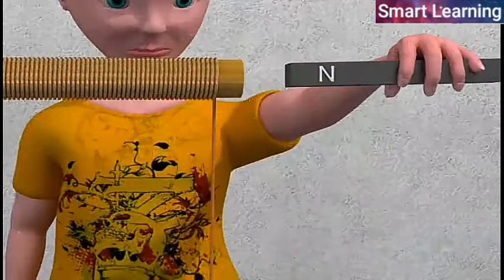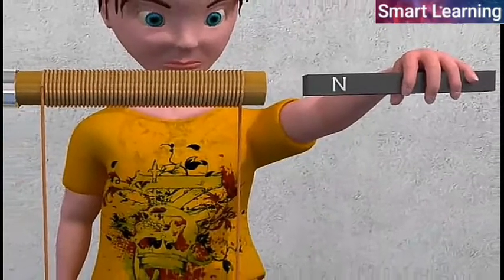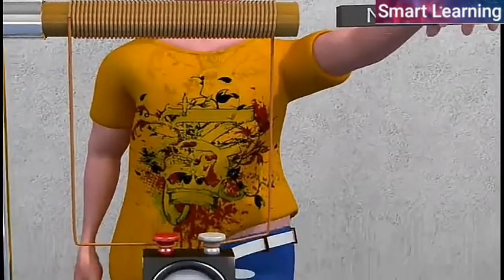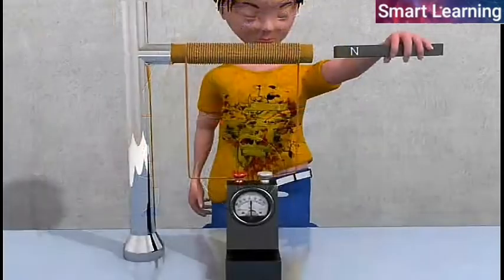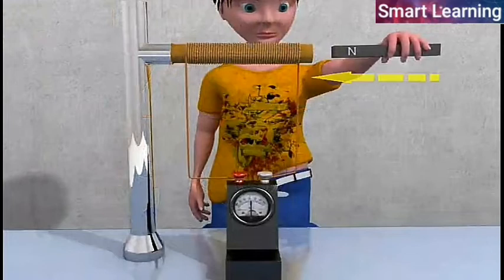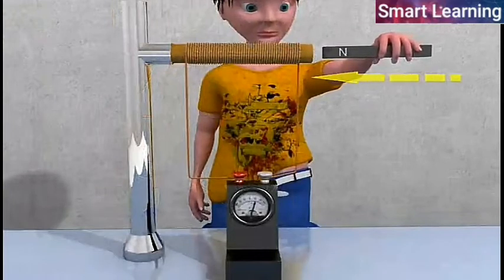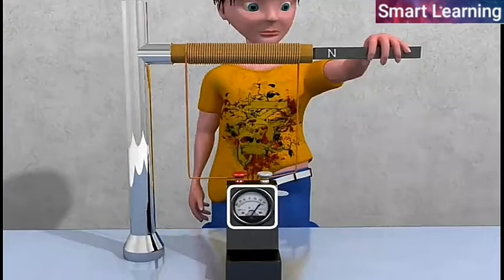Faraday observed, when the magnet is stationary, there is no deflection in the galvanometer. When the north pole of the magnet is brought towards the coil, a current flows in the coil and the galvanometer shows deflection towards the right.